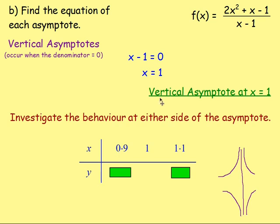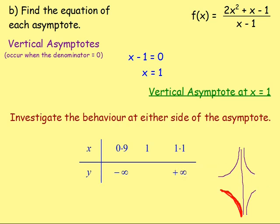Substituting x = 0.9 into the original equation gives a negative value, meaning the graph goes down towards negative infinity just before x = 1. Substituting x = 1.1 gives a positive value, so just after x = 1 the graph comes down from positive infinity. Those are the behaviours on either side of the vertical asymptote x = 1.